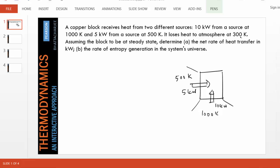It loses heat to atmosphere at 300 Kelvin, so let's say this is our 300 Kelvin atmosphere and we don't know how much. Let's call this Q dot loss or Q dot atmosphere, assuming the block to be at steady state.